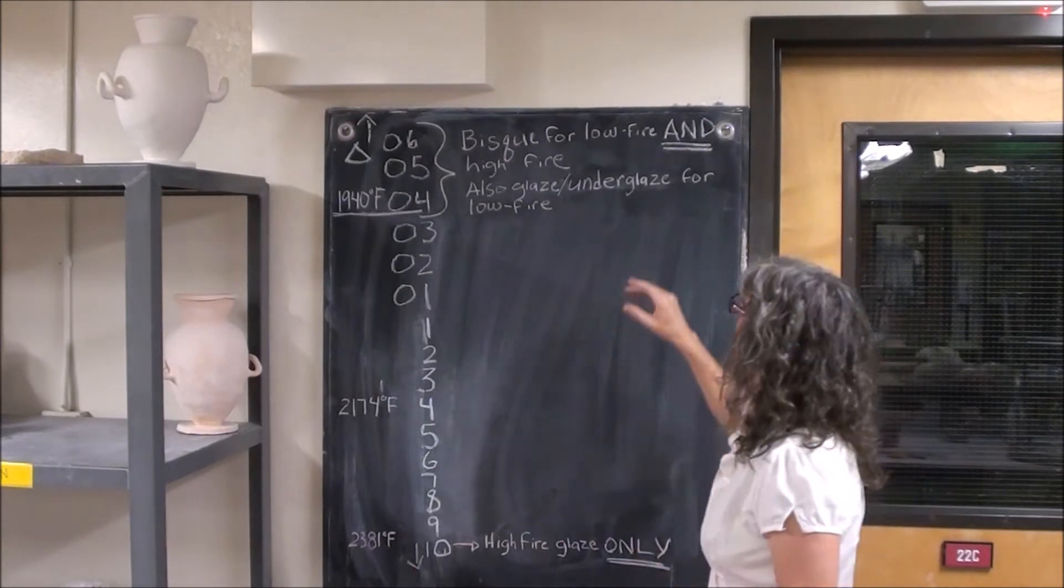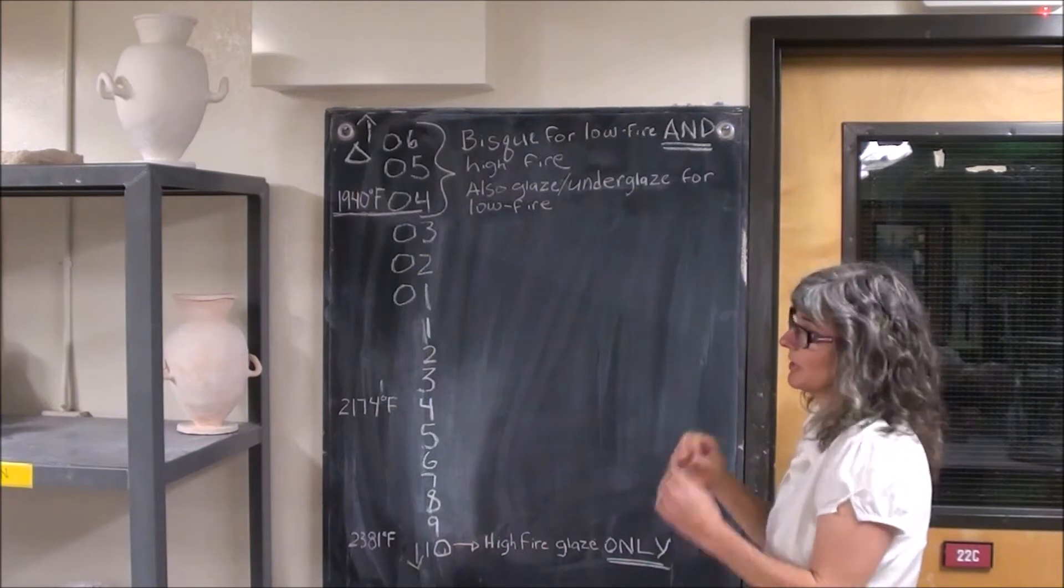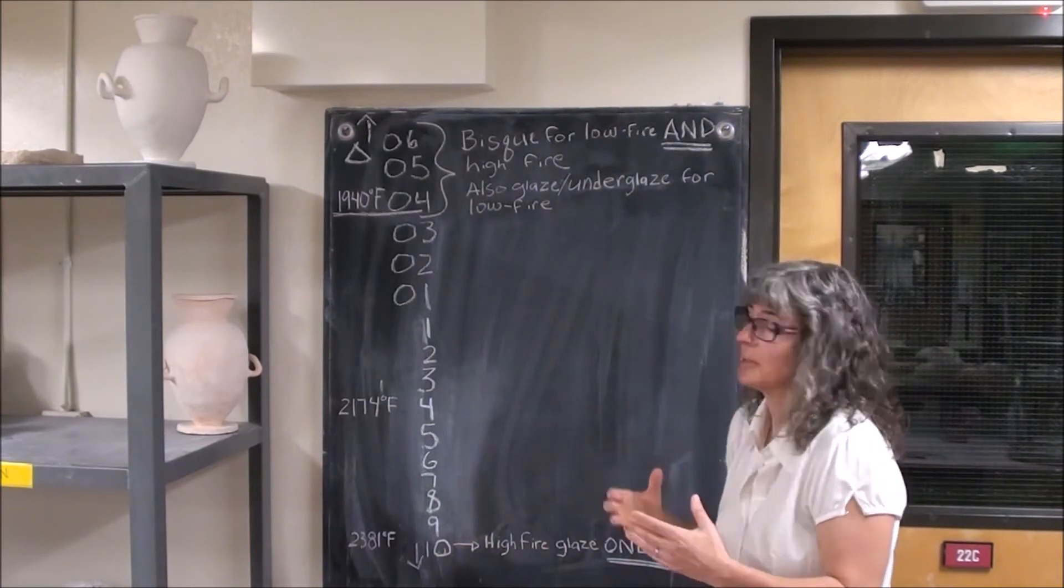Both low fire and high fire clay bodies bisque to the same temperature. They all go in the kiln together. We do that to be very efficient. We're trying to make the work strong, permanent, less fragile, and be energy efficient.